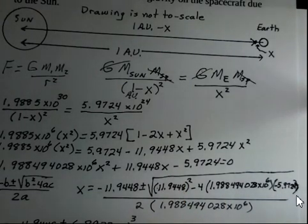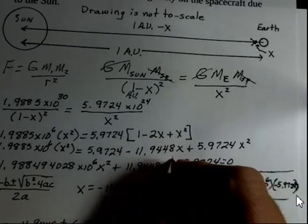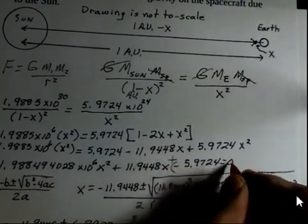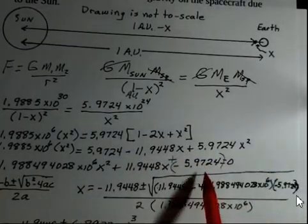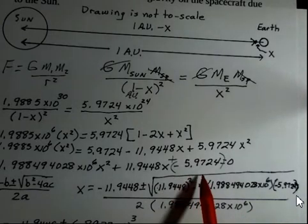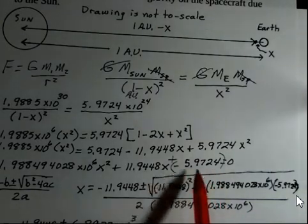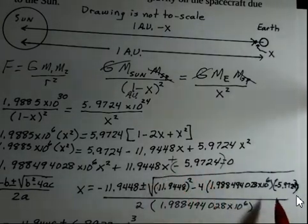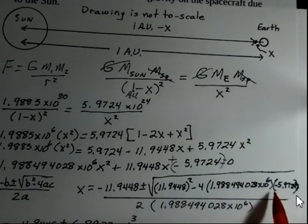This is, if I want to write it a different way, plus a negative 5.9724. The c constant is a negative number. And that's crucial that you carry along that negative sign here.